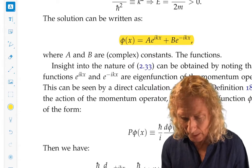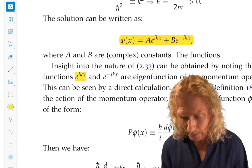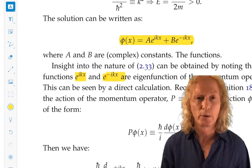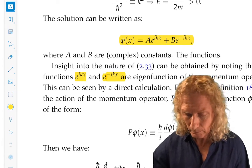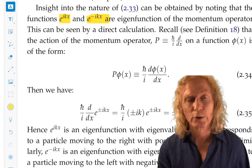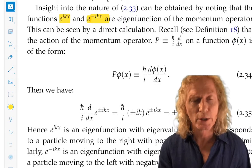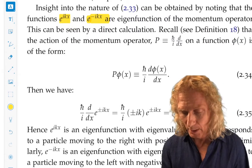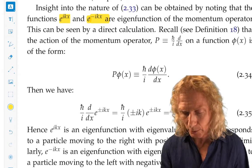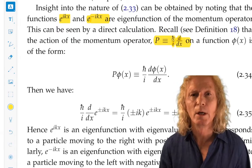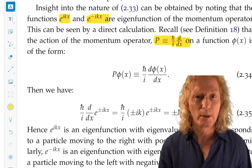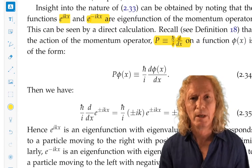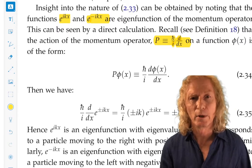Now, these functions, e to the ikx and e to the minus ikx, are interesting. They have a physical interpretation. They're actually eigenfunctions of the momentum operator. Remember from the previous chapter, the momentum operator, uppercase P, we use uppercase for operators, is h-bar over i d by dx, this differential operator. So how do I know it's an eigenfunction? Check it directly.